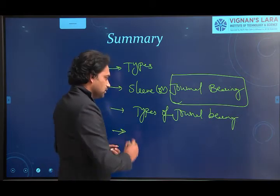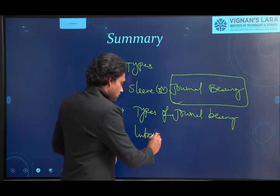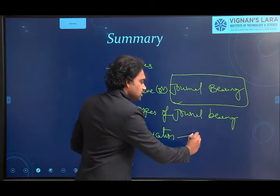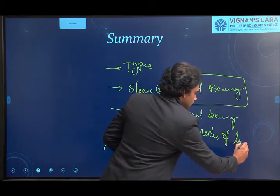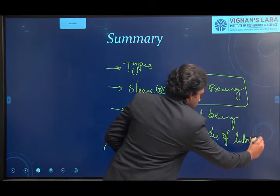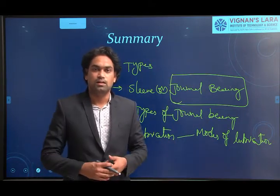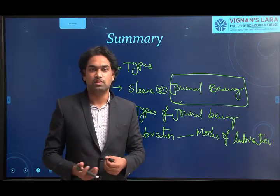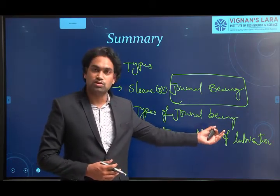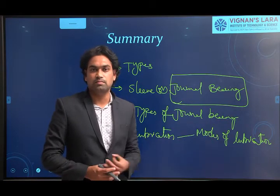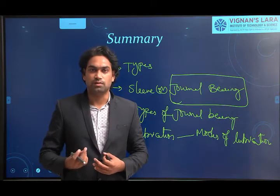We also covered lubrication: what lubrication is, and the modes of lubrication. Lubrication is the science of applying a lubricant or layer of lubricant between two surfaces. There are three basic modes of lubrication used in sliding contact bearings: thick film, thin film, and zero film.